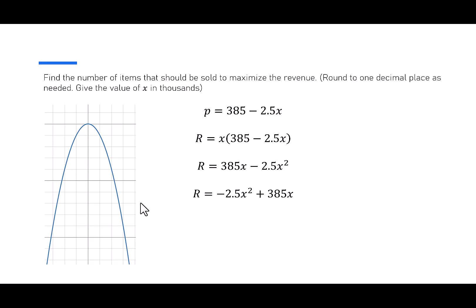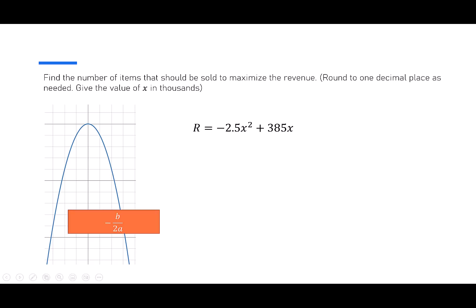When we think about this as being a quadratic, notice the negative 2.5. Because the parabola opens down, I know that I have a maximum at the vertex. To find the vertex, we need to calculate negative b over 2a. So for our equation, we have negative 385 over 2 times negative 2.5. Be careful with the negative signs here.